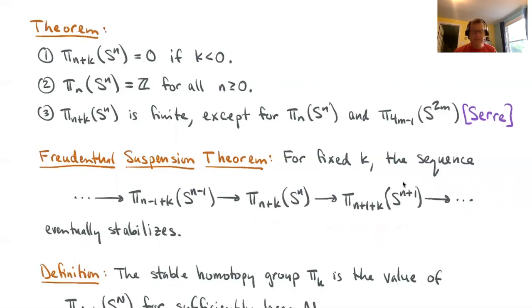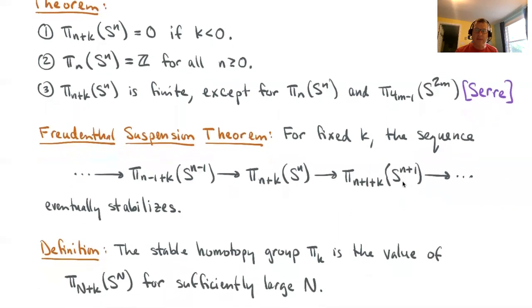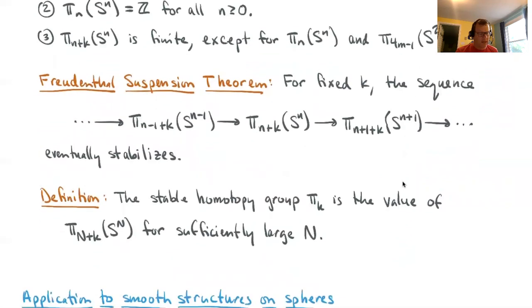The theorem says that this sequence eventually stabilizes, that what happens eventually is that there's some fixed group that occurs again and again forever. We're going to study that stable limit value. The stable homotopy group π_k is the value of π_{n+k}(S^n) for sufficiently large n. The Freudenthal suspension theorem says precisely that π_{n+k}(S^n) does not depend on n as long as n is large.